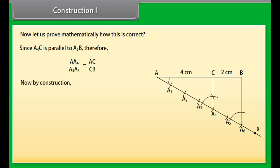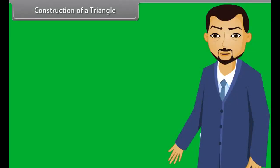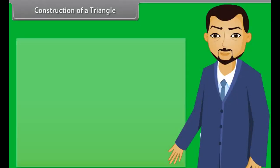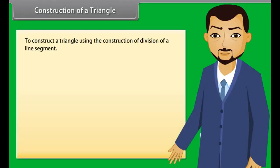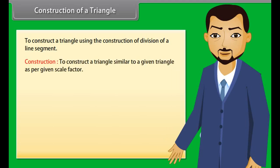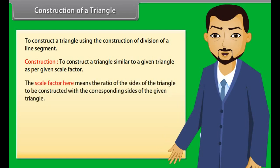Now let us prove mathematically how this is correct. Since A4C is parallel to A6B, therefore by the basic proportionality theorem, AA4 upon A4A6 equals AC upon CB. Now by construction, AA4 upon A4A6 equals 4 upon 2. Therefore AC upon CB equals 4 upon 2. This shows that C divides AB in the ratio 4 is to 2.